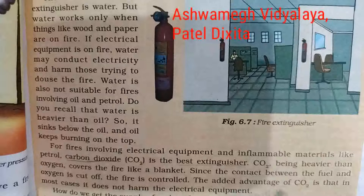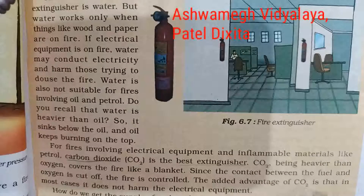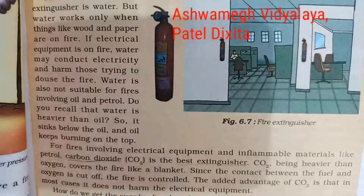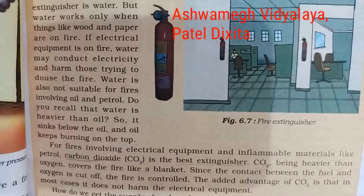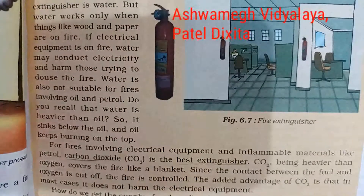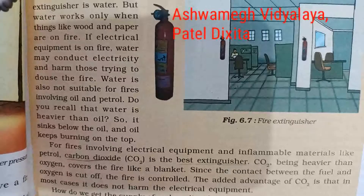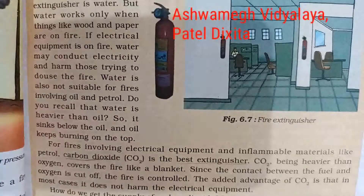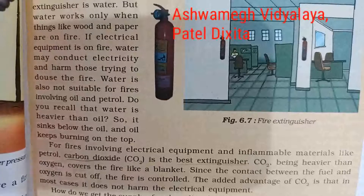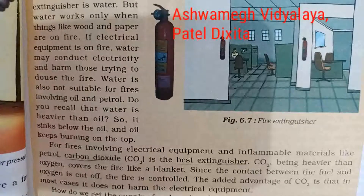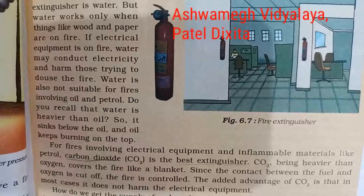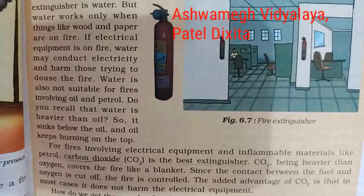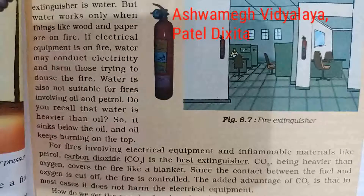CO2 क्या करता है? Oxygen का जो supply है fuel से, वो oxygen और fuel का जो contact है वो cut off कर देता है. Means oxygen provide नहीं होने देता, जिससे कि fire control में हो जाती है. And CO2 जो है वो electrical equipment को harmful नहीं है. इसके लिए CO2 most means based extinguisher है.